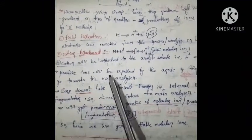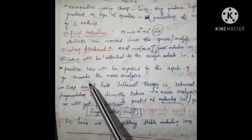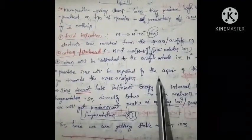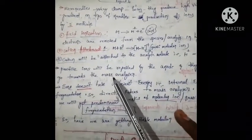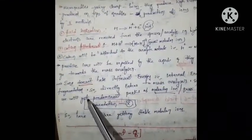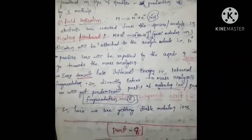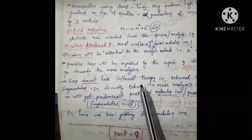Positive ions are repelled by the anode since both are positively charged. Due to this repulsion they move towards the right side, that is towards the mass analyzer. Importantly, these ions do not have sufficient internal energy for fragmentation — sufficient energy is required for fragmentation to occur, but these ions lack it.